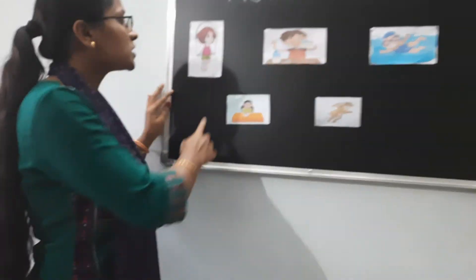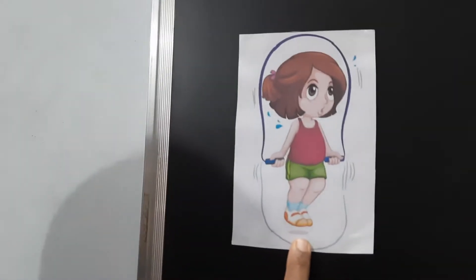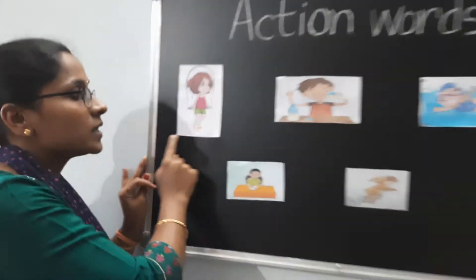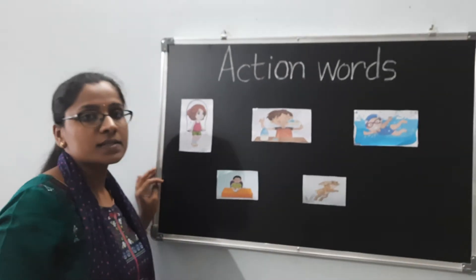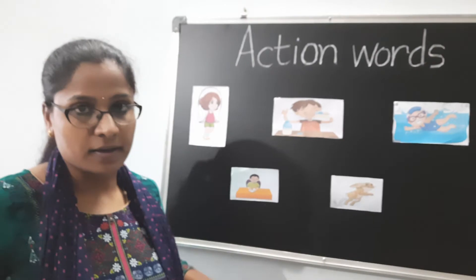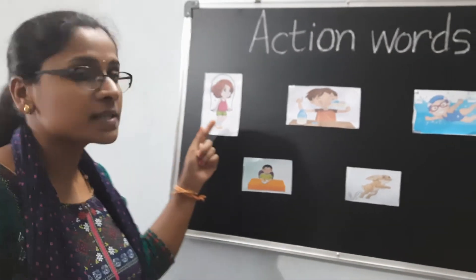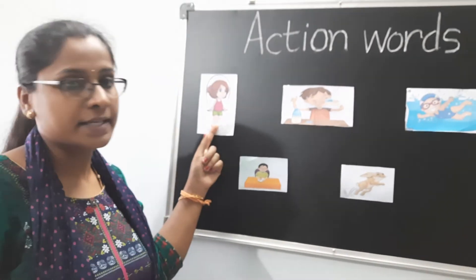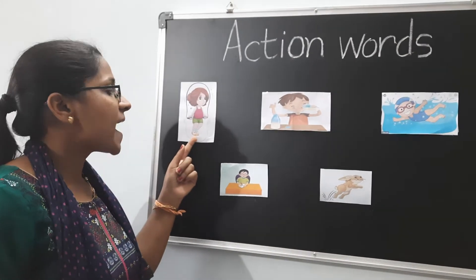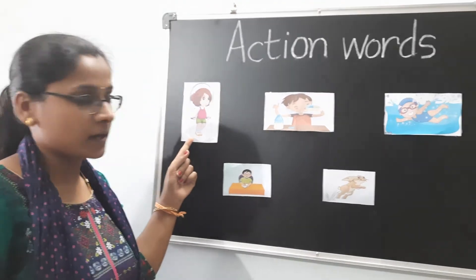What is the first picture? Skipping. The girl is doing skipping. This is a good exercise. So here the action word is skipping.